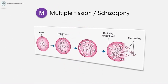Multiple fission, or schizogony: Plasmodium exhibits schizogony in which the nucleus undergoes several successive divisions within the schizont to produce a large number of merozoites. The daughter nuclei rupture the schizont and the merozoites formed inside are released.